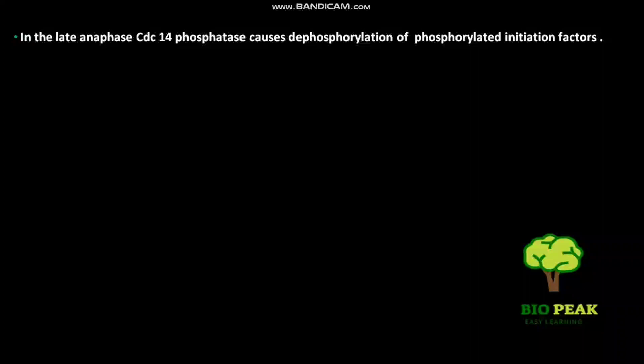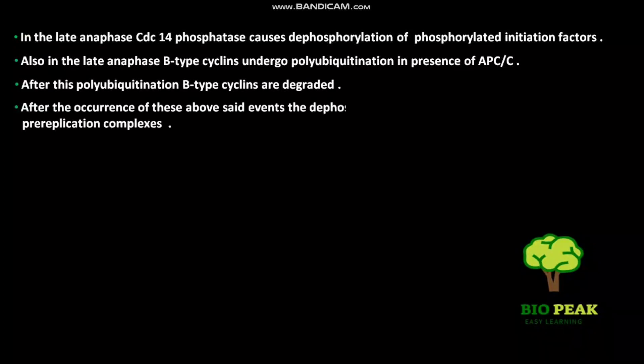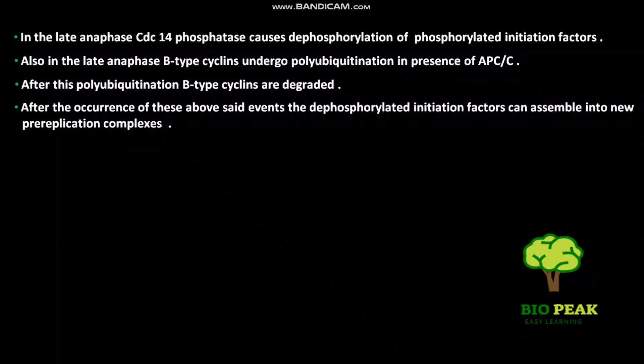In late anaphase, Cdc14 phosphatase causes dephosphorylation of phosphorylated initiation factors. Also in late anaphase, B-type cyclins undergo polyubiquitination in the presence of APC/C. After this polyubiquitination, B-type cyclins are degraded. Following these events, the dephosphorylated initiation factors can assemble into new pre-replication complexes.